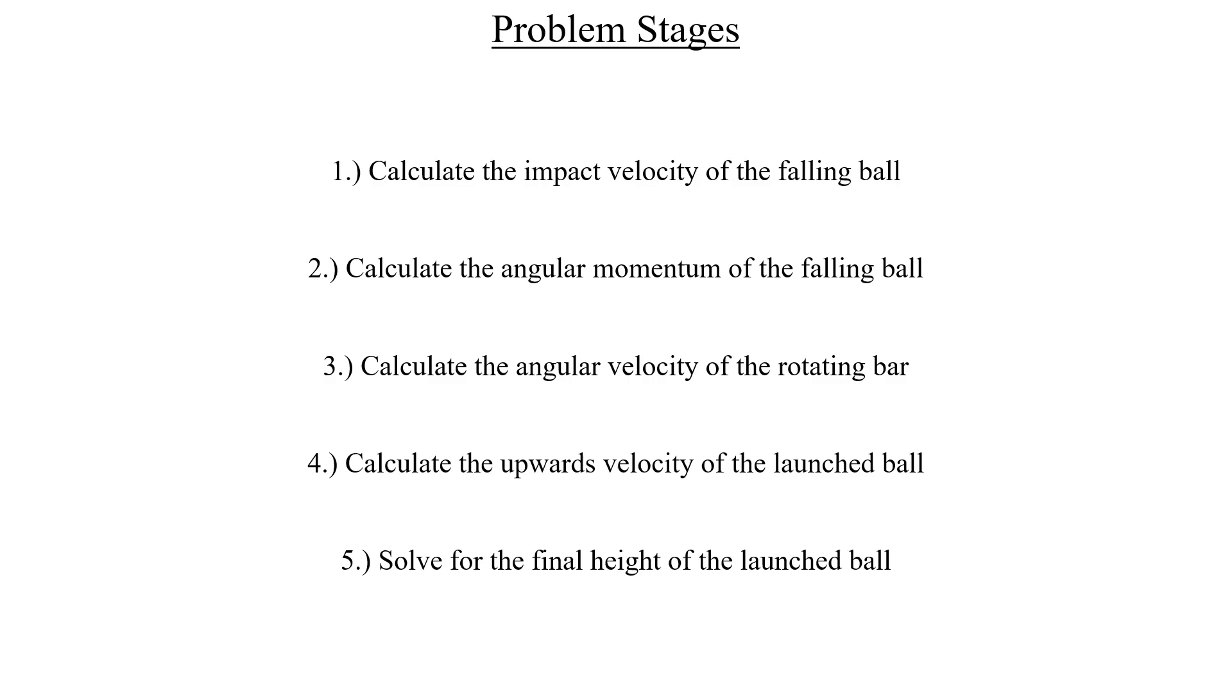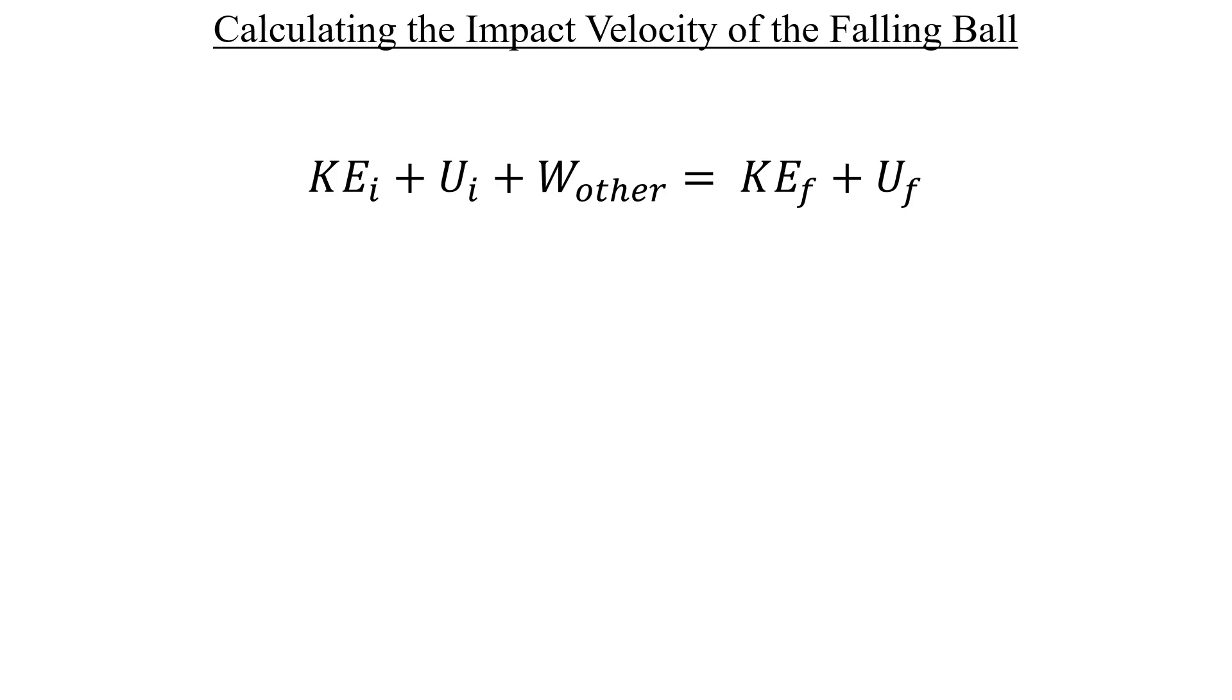Pull up the energy conservation equation. The left hand side represents dropping the ball at the initial height from rest, and the right hand side represents the ball striking the bar. Dropping the ball from rest means there's no initial kinetic energy, so let's throw that piece away. Since there was no mention of anything like air resistance or other dissipative forces, we can ignore the other work term as well.